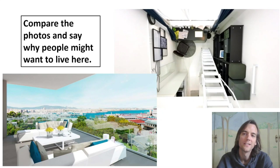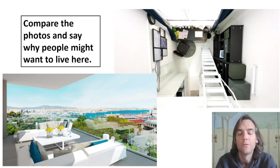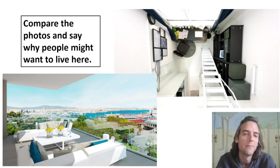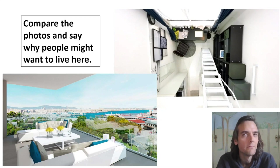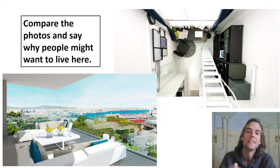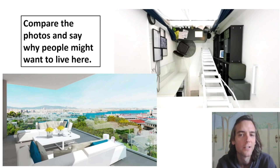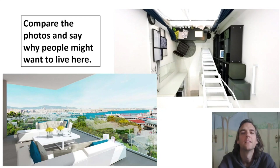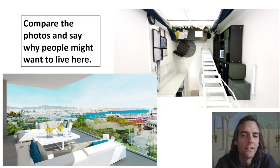We'll finish with some speaking on a fun note. We have photos of different types of apartments. For B2, compare the photos and say why people might want to live there. For C1, we add another photo and also say what their typical daily routine might be — though that might be a bit difficult to answer in one minute. The main thing is talking about photos, answering the question, and coming up with ideas — similar to what we did in the essay with advantages — then putting it into a one-minute mini essay.